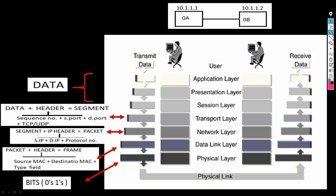Let's try to understand the whole process of the OSI model. Machine A, whose IP is 10.1.1.1 and whose MAC address is 0A, is sending data to Machine B, whose IP is 10.1.1.2 and whose MAC address is 0B.